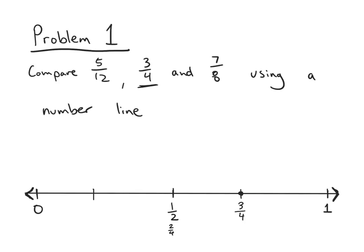The next fraction I'm going to look at is the next largest unit, which is 7 eighths. When I look at 7 eighths, I notice it's very close to 8 eighths, and 8 eighths is the same as 1 whole. So reasoning using the benchmark of 1 whole, I know that 7 eighths must be 1 eighth less than 1 whole. I'll partition the number line into eighths, and 7 eighths would be approximately right here. I can already tell that 3 fourths is smaller than 7 eighths because it is further to the left on the number line.